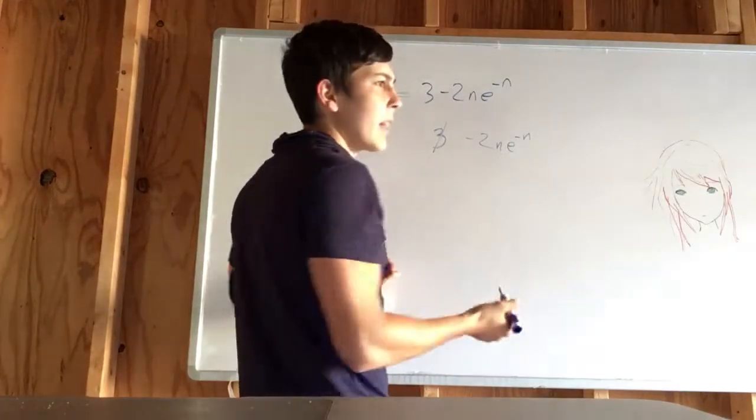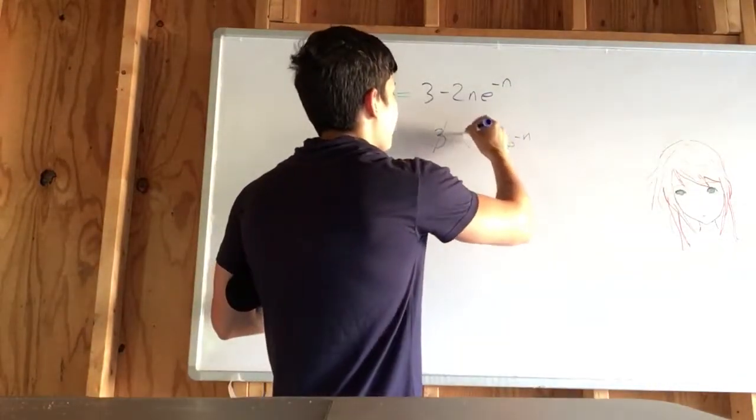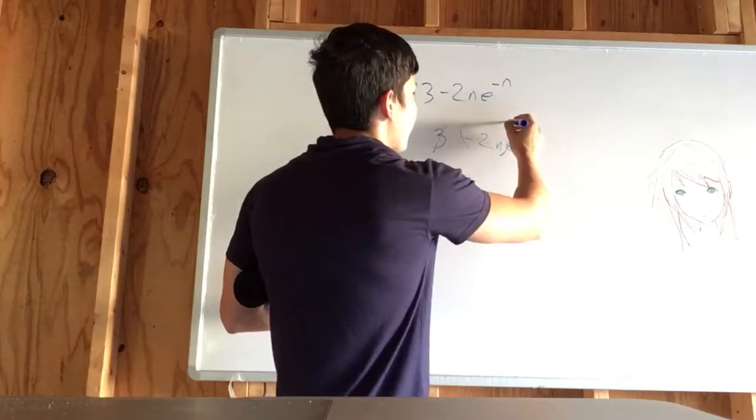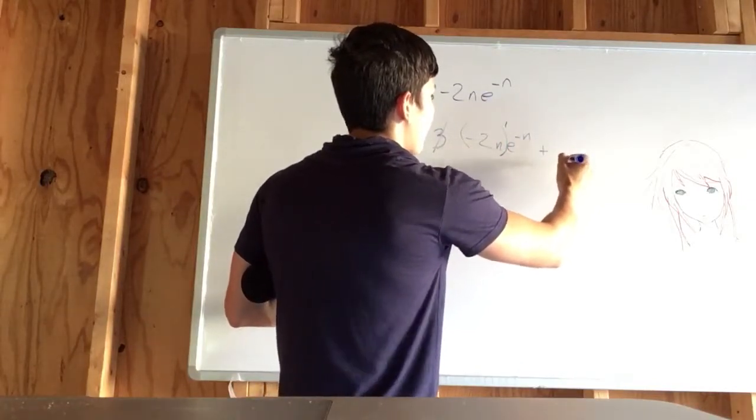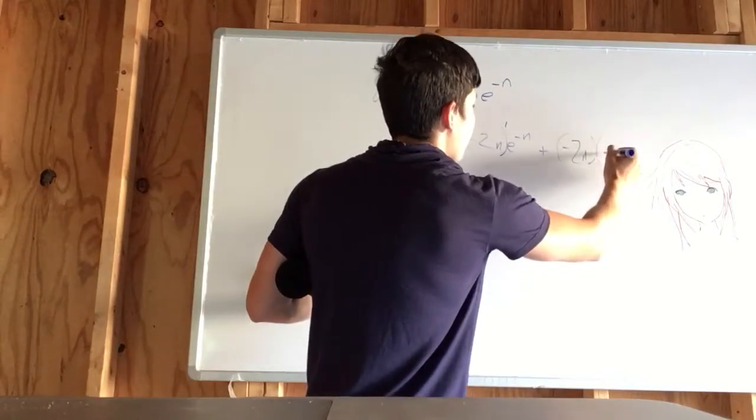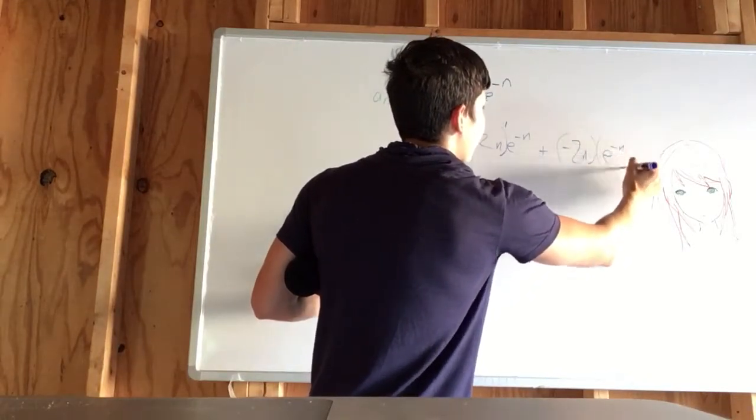You have a product. When you have a product like this, remember, when you take your derivative, you do the derivative of this times the normal version of this, plus the normal version of this times the derivative of this one.